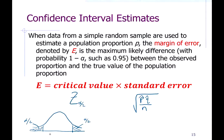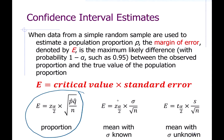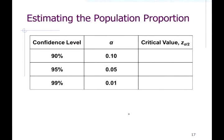Before getting to the specific calculations, the standard error formula differs depending on whether we're estimating a proportion or a mean. By far the most common confidence levels are 90%, 95%, and 99%. The confidence and significance are complements of each other: if confidence is 90% or 0.9, significance is 0.1; likewise 95% and 5%, 99% and 1%.